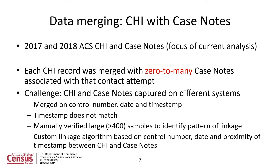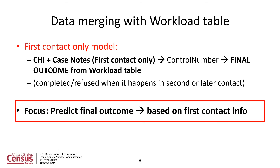In the interest of time, we are going to skip the data merging efforts. Once we merge the CHI records with the case note records for a given contact, we then only choose the CHI and case notes from the first contact, and we merge it with the final outcome of that particular case — whether it was completed or refused in the second or later contact. Our focus is to predict the final outcome based on only the first contact information given in the CHI and case notes.